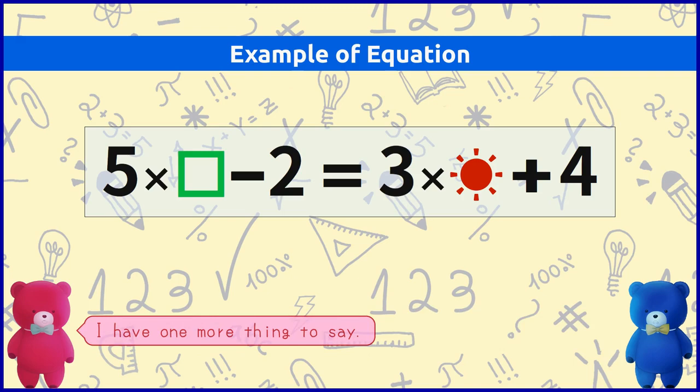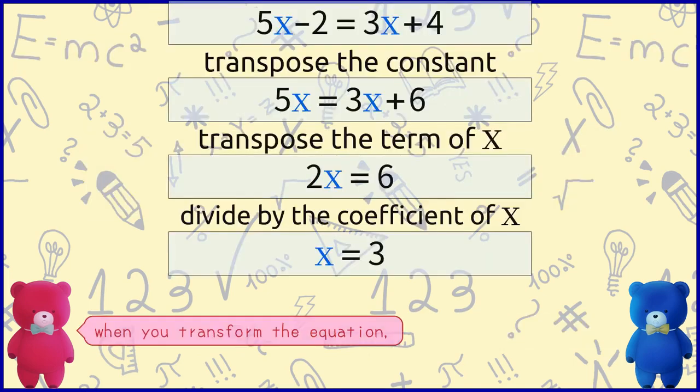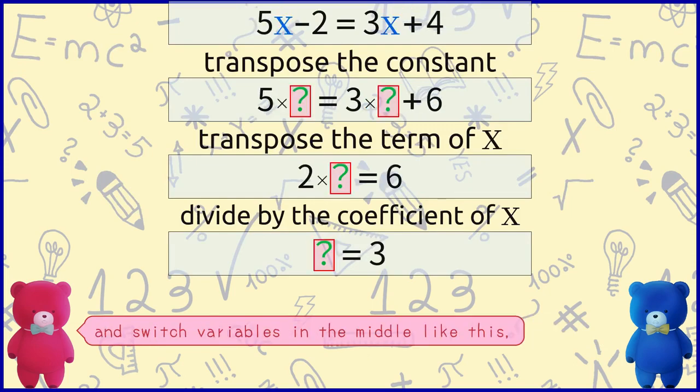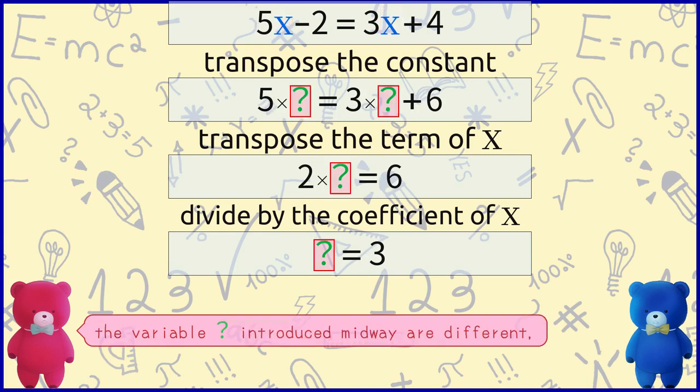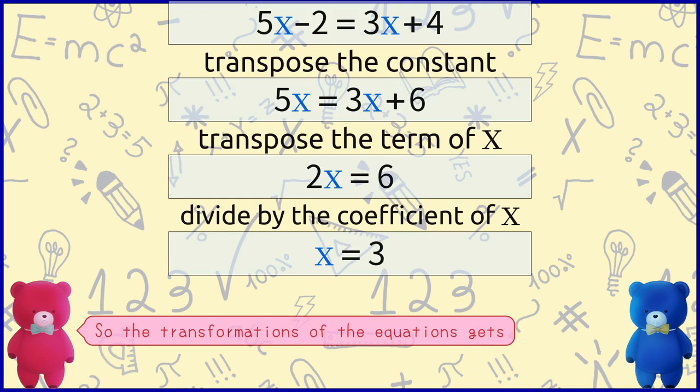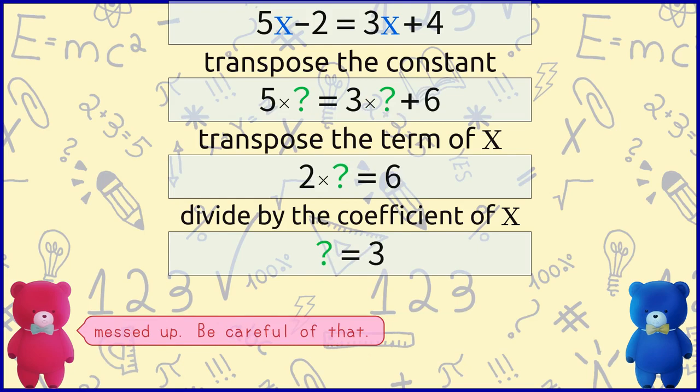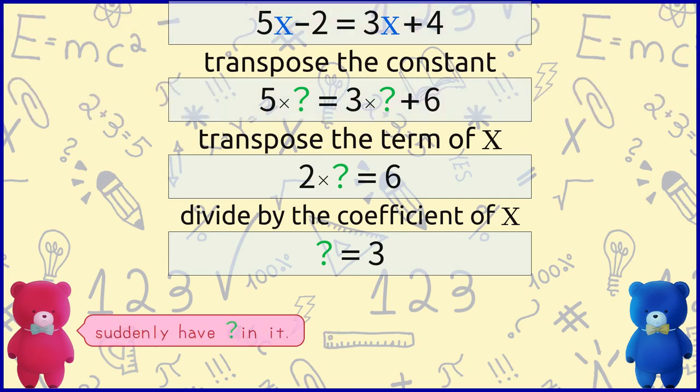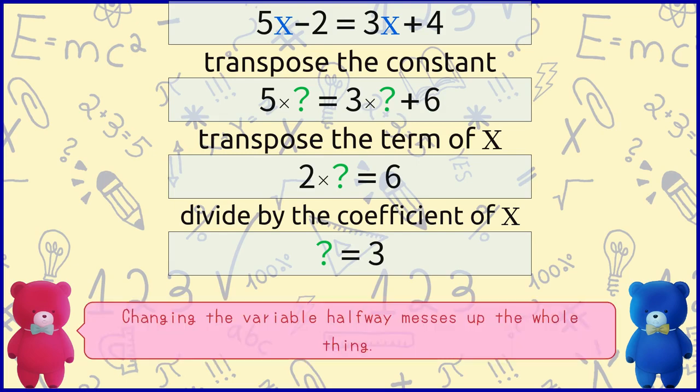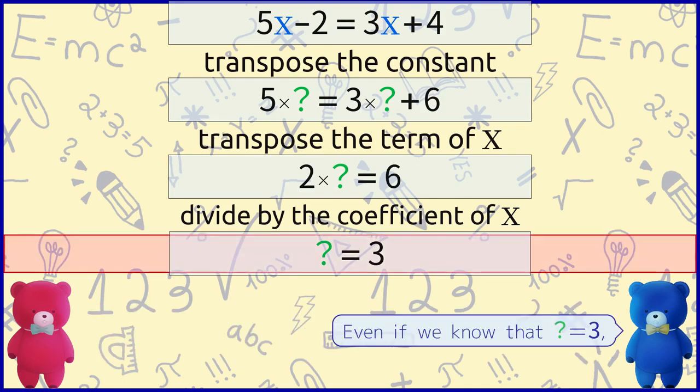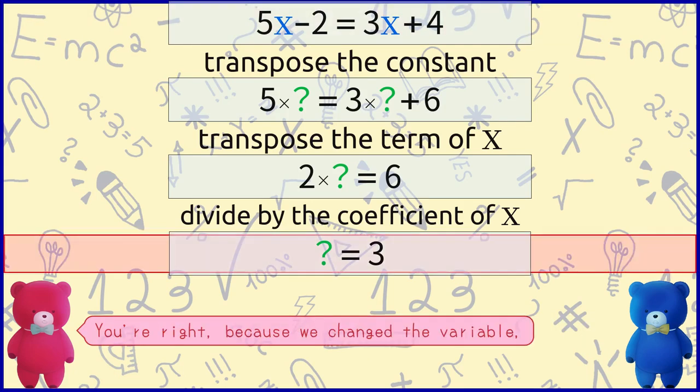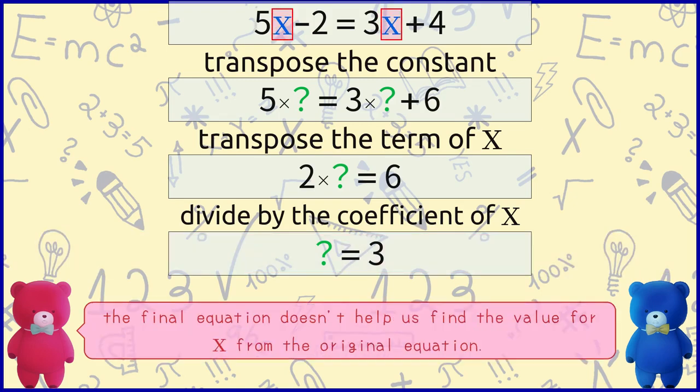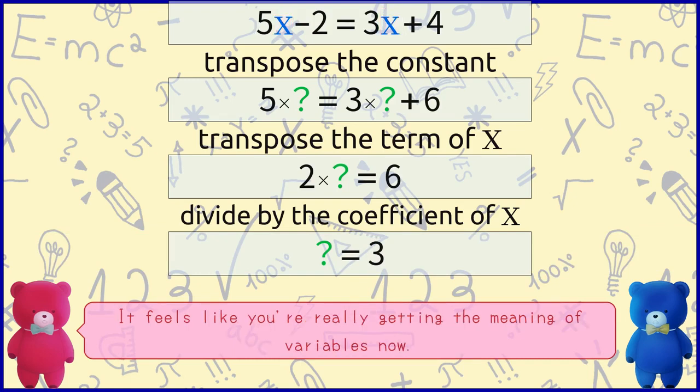I have one more thing to say. Go ahead. When you transform the equation if you don't use variables consistently like this and switch variables in the middle like this, the variable x found in the original equation and the variable question mark introduced midway are different. So the transformations of the equations gets messed up. Be careful of that. So, in simple terms an equation with x can't suddenly have question mark in it. Alright. Changing the variable halfway messes up the whole thing. Even if we know that question mark equals 3 we still don't know what x is. You've got a good point. You're right because we changed the variable. The final equation doesn't help us find the value for x from the original equation. It feels like you're really getting the meaning of variables now.